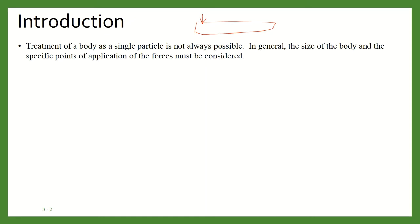Sometimes when the size of the body is not very large, the body can be considered as a single particle. But sometimes size does matter — for example in the case of trains, which have a very large size, or big airplanes. In that case we need to consider the size of the body and also the specific points of application of the forces.